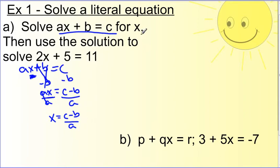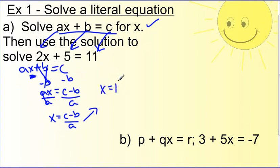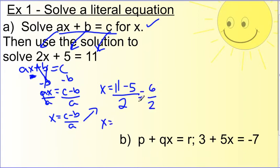So we did step one. Now step two: use the solution to solve the specific equation. These two equations are almost identical — the setup is the same. The a is 2, b is 5, c is 11. So we plug in those numbers: x equals c minus b over a, which is 11 minus 5 over 2. Well, 11 minus 5 is 6, and 6 divided by 2 is 3. So x equals 3.